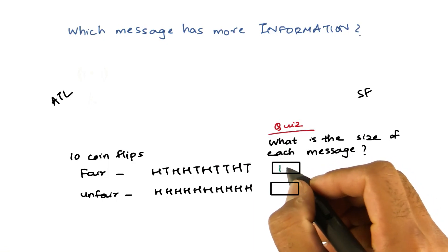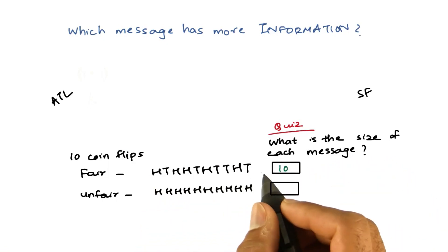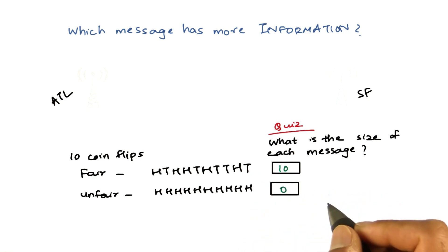So in the first case, we will need 10 bits for each of those 10 flips. But in the second case, we don't need any bits.